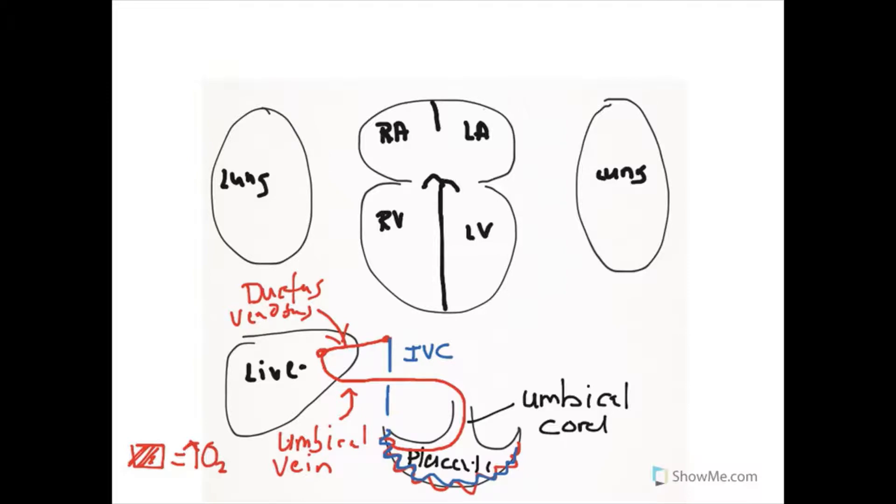The blood is going to the liver where I drew a shunt. The fetal shunt that we're seeing here is the ductus venosus. You should note that the veins in the umbilical circulation are oxygenated.